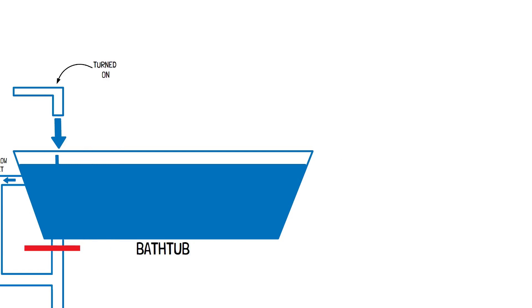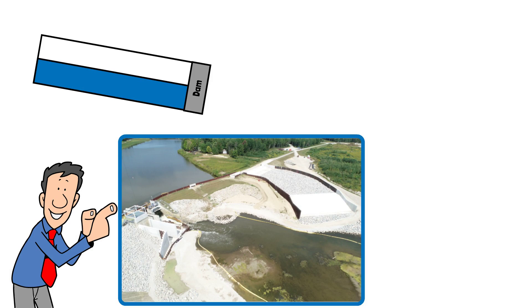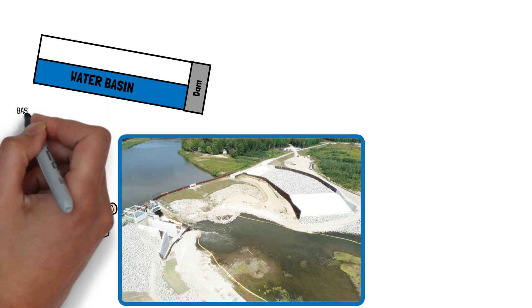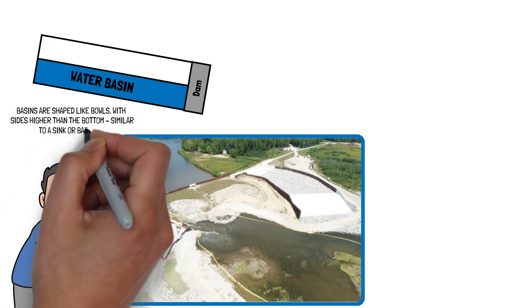An impounded lake operates in a similar way. A lake is a basin, which is a depression or dip in the earth's surface. Basins are shaped like bowls with sides higher than the bottom, similar to a sink or bathtub.